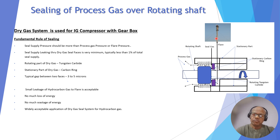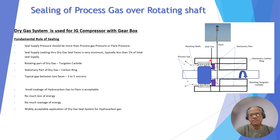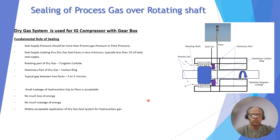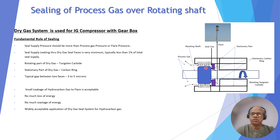Comparing the previous case where only a labyrinth vented large quantities of gas, now with labyrinth plus dry gas seal, the losses are minimized. The seal gas supply seals the process side, and across the dry gas seal faces, the flow is less than 1% of total flow. Only a small, acceptable amount vents to flare. This is why dry gas seals are widely used for IG compressors worldwide.